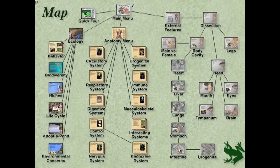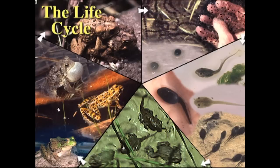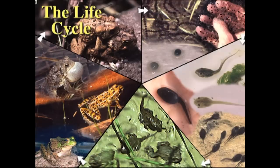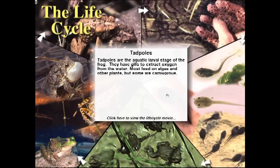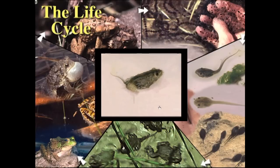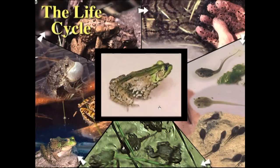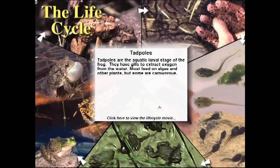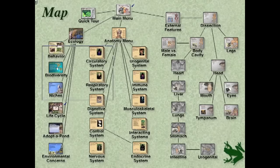Before we start dissecting, you have to see some of my favorites here. Here's the life cycle of a frog — the eggs, the tadpoles, and the juveniles. Click here to see the life cycle movie. An egg turns into a tadpole, turns into a frog. It's metamorphosis in five seconds or less.